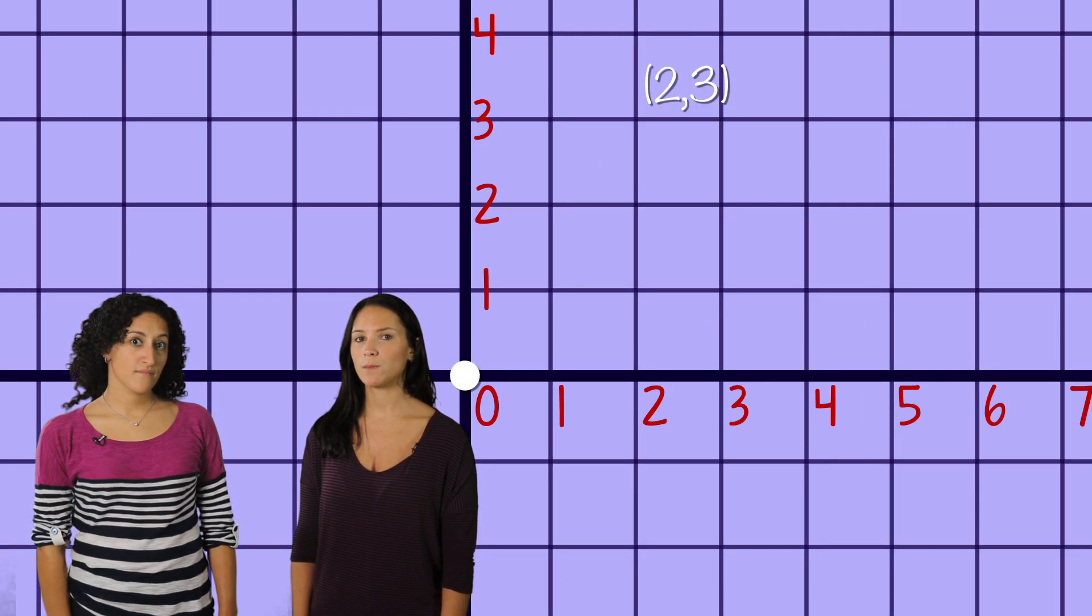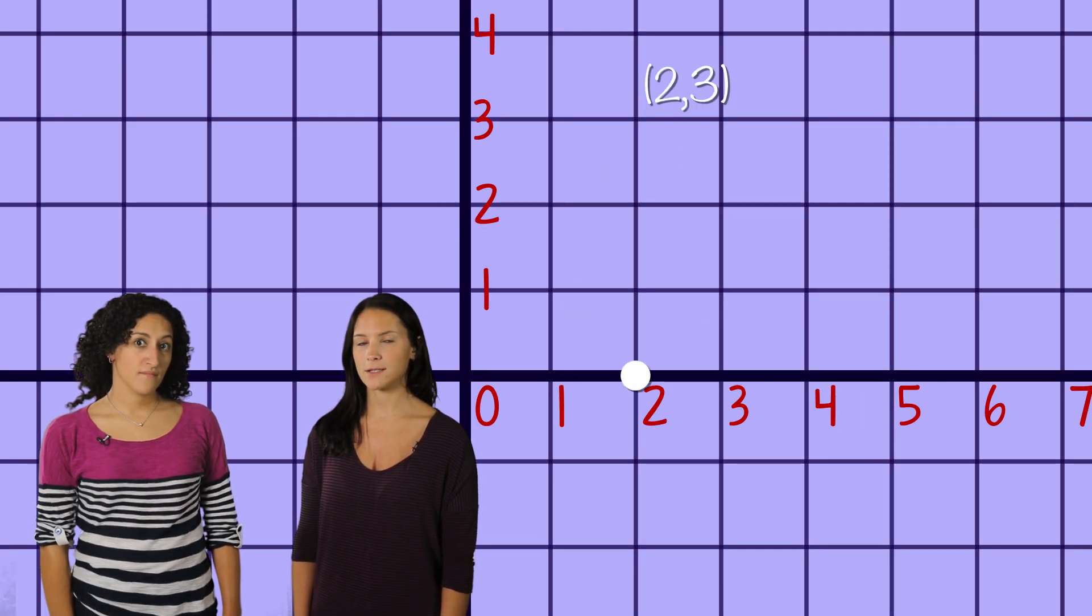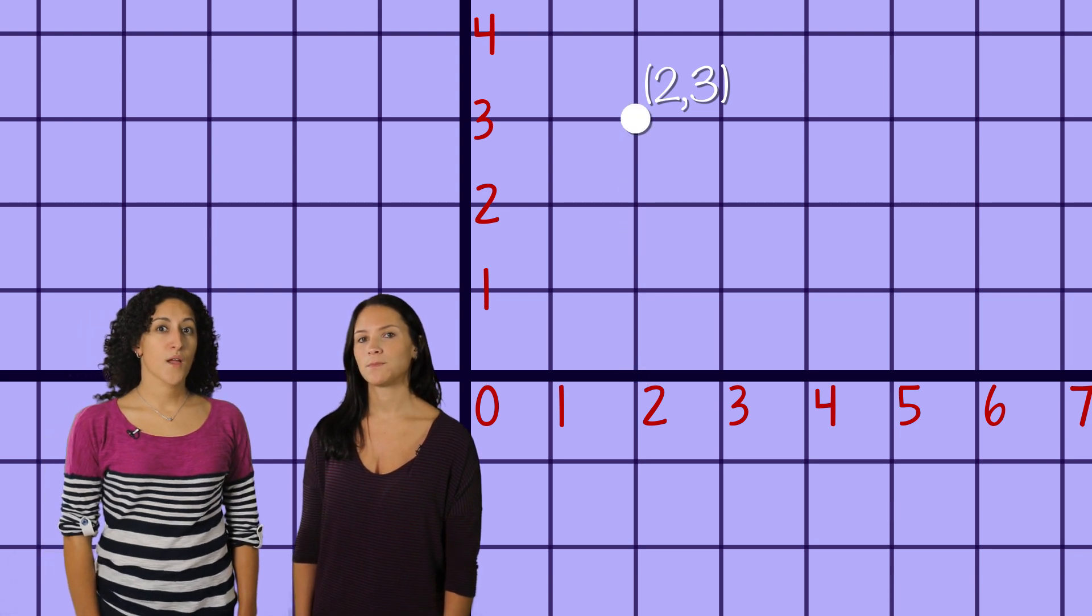So the coordinates (2,3) would mean we are two places over on the x-axis and three places up on the y-axis. But wait,